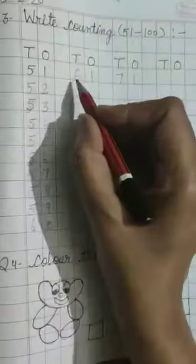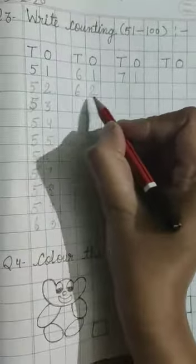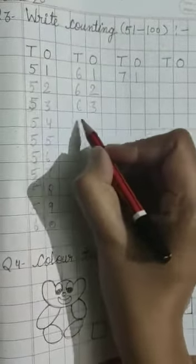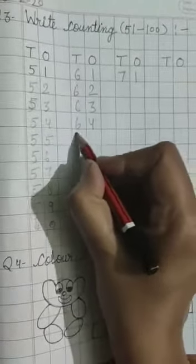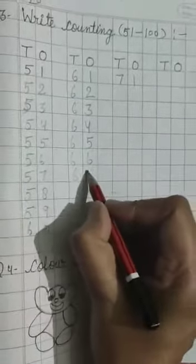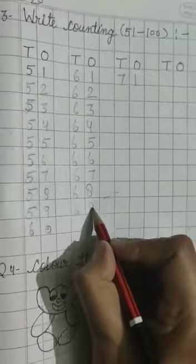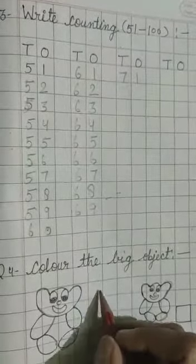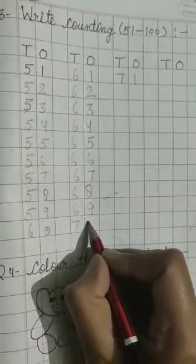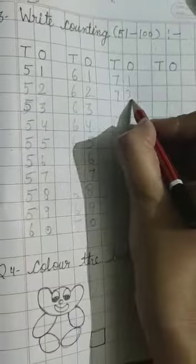Then 60. After that 61, 62, 63, 64, 65, 66, 67, 68, 69. And what comes after 69? Yes, 70.